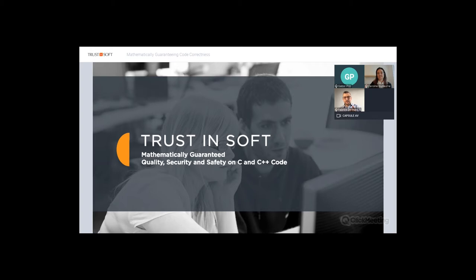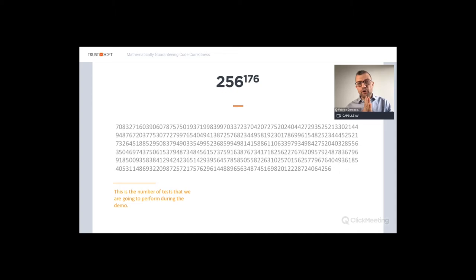The floor is yours, Fabrice. So I'm going to start with a number. This is a big number: 256 to the power of 176. It takes six lines to actually write it, so it's definitely big. And this is the number of tests that Fabien is going to show you in the demo, performed live on a piece of code to do cryptography that you could download from the internet.